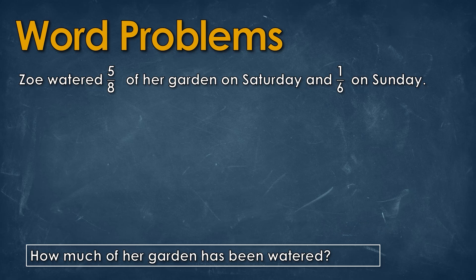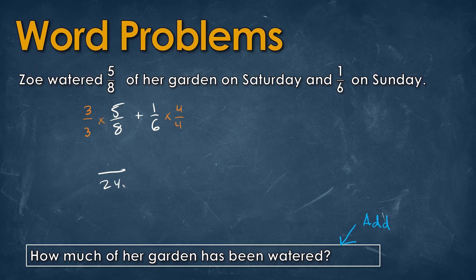Reading the next question, it asks how much of her garden has been watered — that means adding. Zoe watered 5 over 8 of her garden on Saturday and 1 over 6 on Sunday. When adding these two numbers we always need to find the least common denominator. We're going to multiply the first fraction by 3 on top and bottom, and the second fraction by 4 on top and bottom, because the least common denominator is going to be 24.